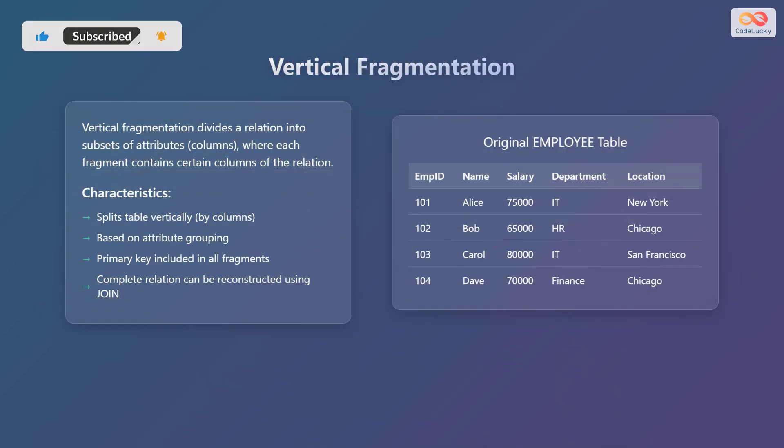Vertical fragmentation involves dividing a relation into subsets of attributes, also known as columns, where each fragment contains certain columns of the relation — in other words, splitting the table vertically based on columns. Key characteristics include: it splits the table vertically by columns; fragmentation is based on attribute grouping, where related attributes are grouped together in the same fragment; the primary key is included in all fragments, which is essential for reconstructing the original relation; and reconstruction is done using the join operation to combine all vertical fragments.